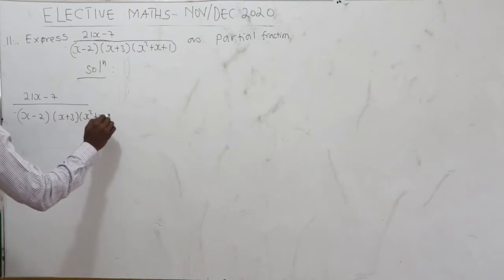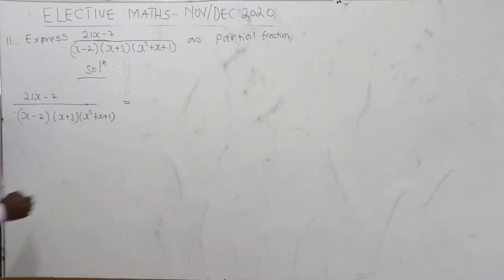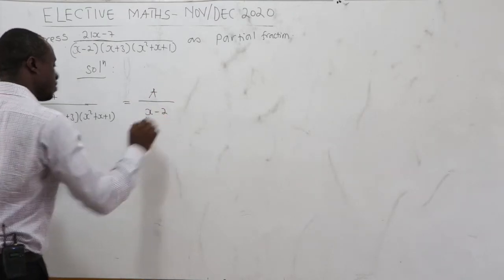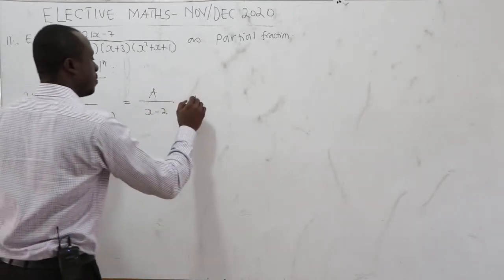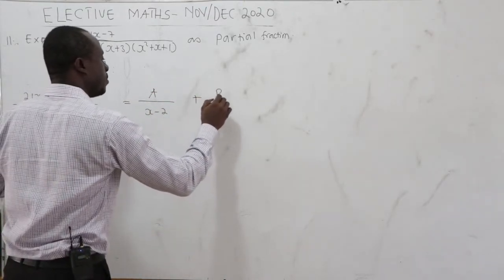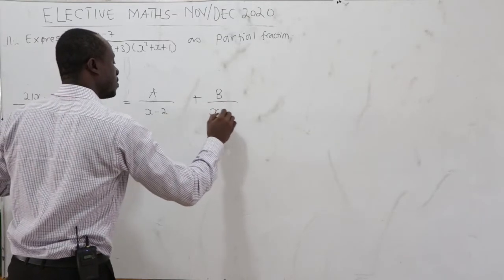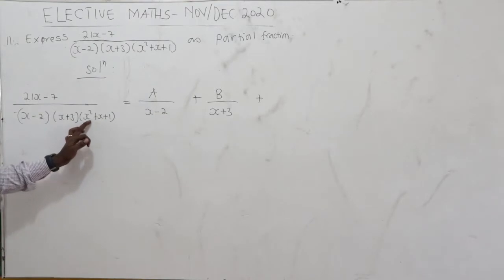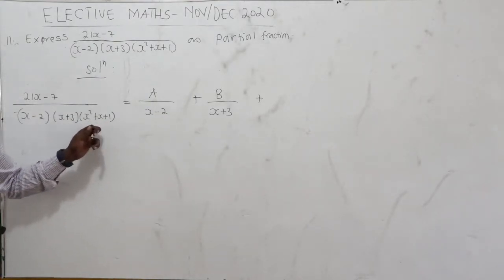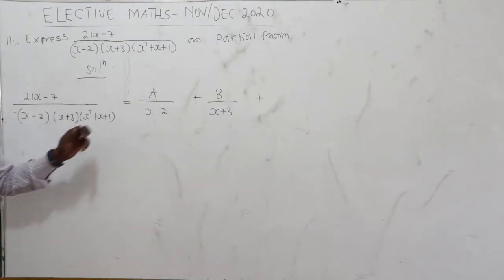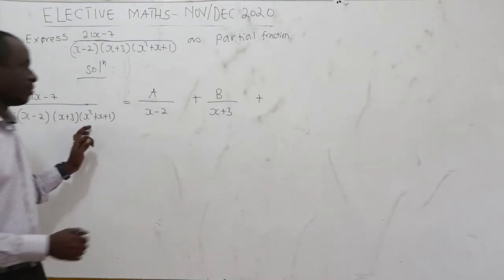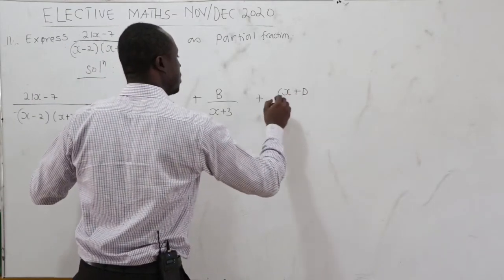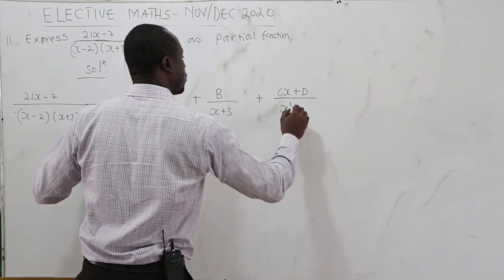We write the partial fractions as A over (x minus 2), plus B over (x plus 3). Now x squared plus x plus 1 is a quadratic that cannot be factorized in the realm of real numbers, so we write Cx plus D over (x squared plus x plus 1).